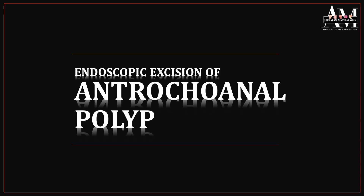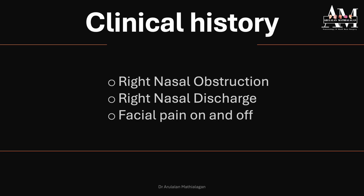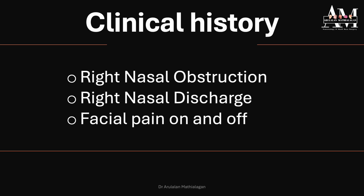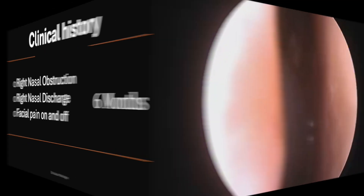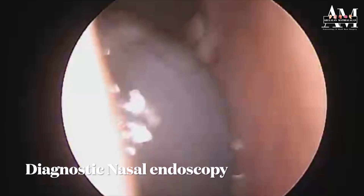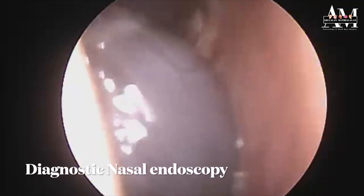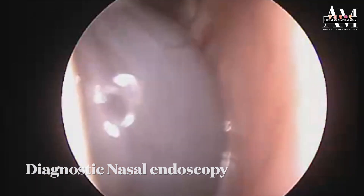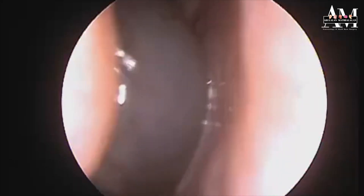In this video I will be describing endoscopic excision of an antrochoanal polyp. This was a young patient with history of right-sided nasal obstruction, discharge, and facial pain on and off for the past six months. On diagnostic nasal endoscopy we could visualize a pale polypoidal mass involving the middle meatus, and the floor, and the imaging also shows the same.